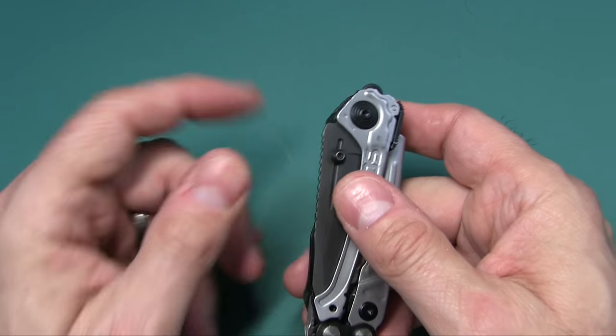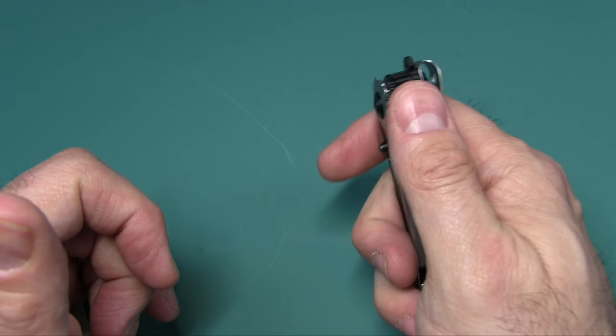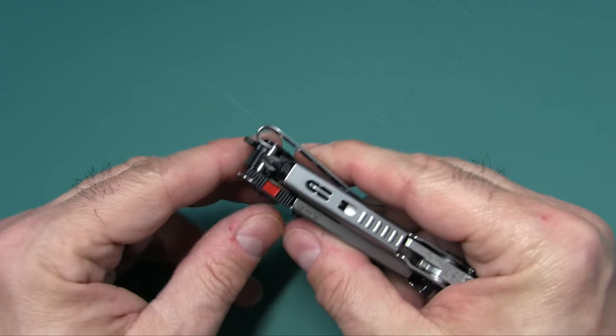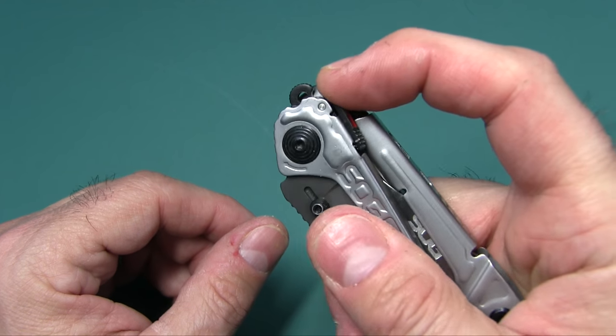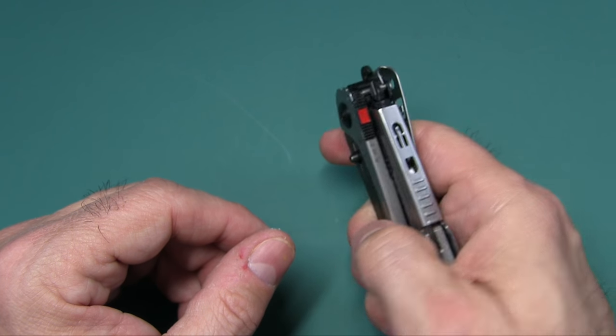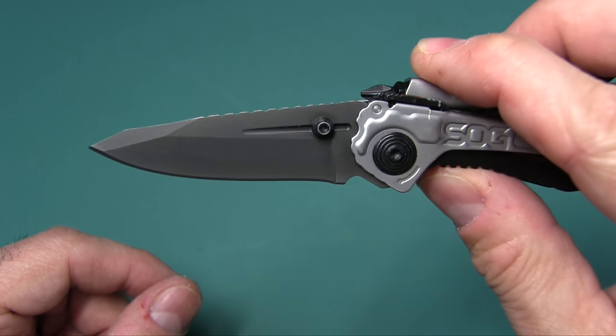But we'll go ahead and run through this. The main and most important thing of course with multi-tools is the knife, and it has a little lock that you click. So this is lock, this is fire. And it is assisted opening. There is your blade.